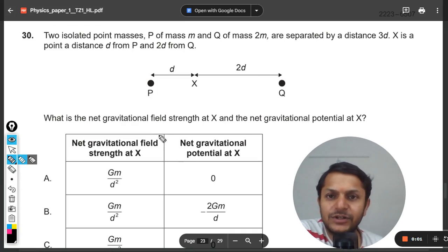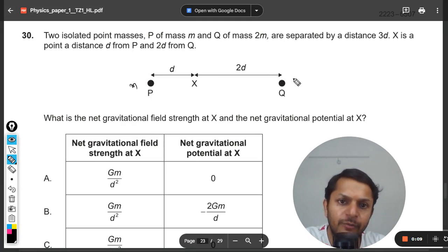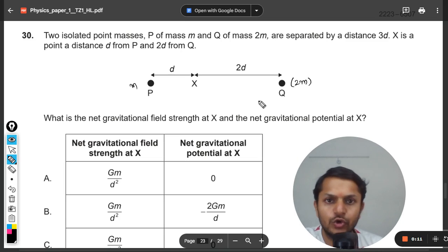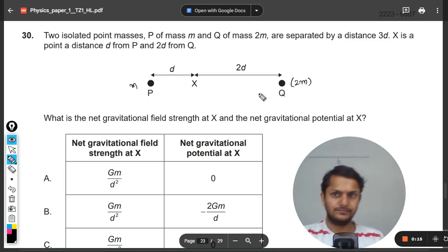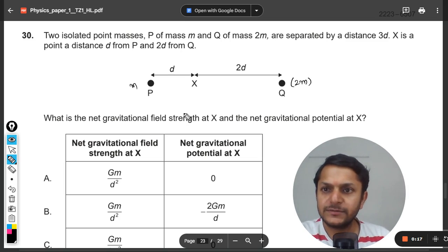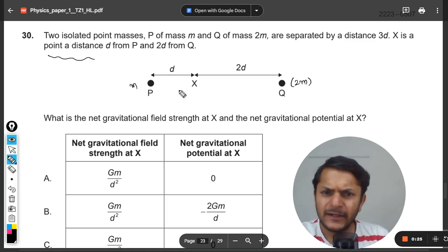Okay dear students, let's see what is in this question. Two isolated point masses P of mass m and Q of mass 2m are separated by a distance of 3d. X is a point distance d from P. I think there is some error here, but anyways it is clearly visible in the diagram that it is d distance away from point P and X is 2d distance away from point Q.